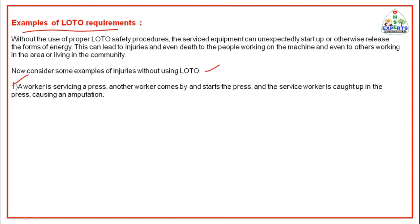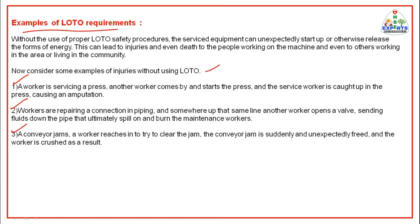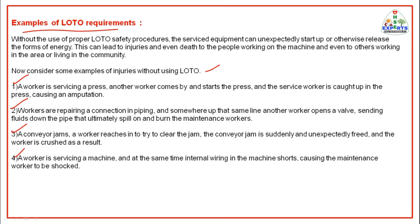Consider some examples of injuries without using lockout and tagout. First example: a worker is servicing a press; another worker comes by and starts the press, and the service worker is caught in the press causing an amputation. Second example: workers are repairing a connection in piping and somewhere up the line another worker opens a valve, sending fluids down the pipe that ultimately spill on and burn the maintenance workers. Third example: a conveyor jams; a worker reaches in to try to clear the jam; the conveyor jam is suddenly and unexpectedly freed and the worker is crushed. Fourth example: a worker is servicing a machine and at the same time internal wiring in the machine shorts, causing the maintenance worker to be shocked.